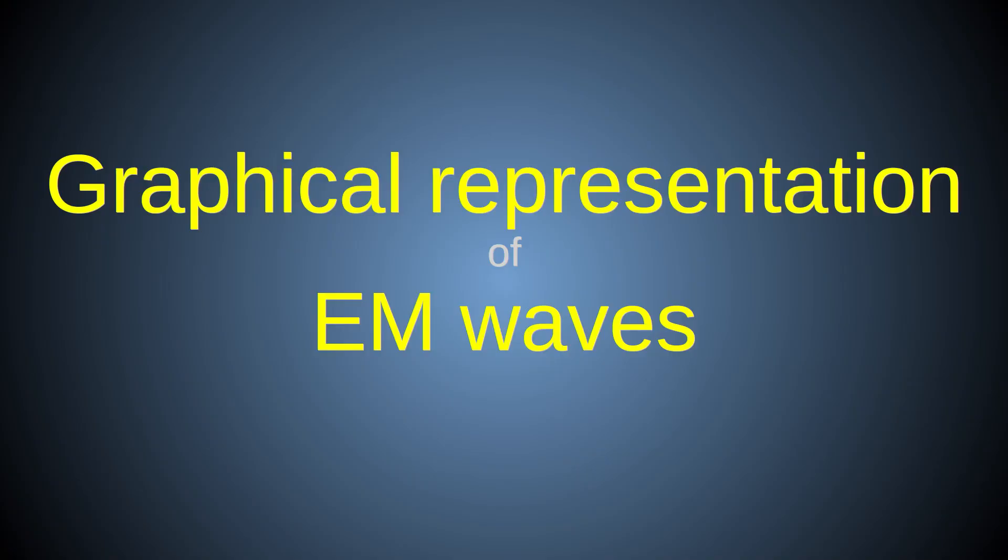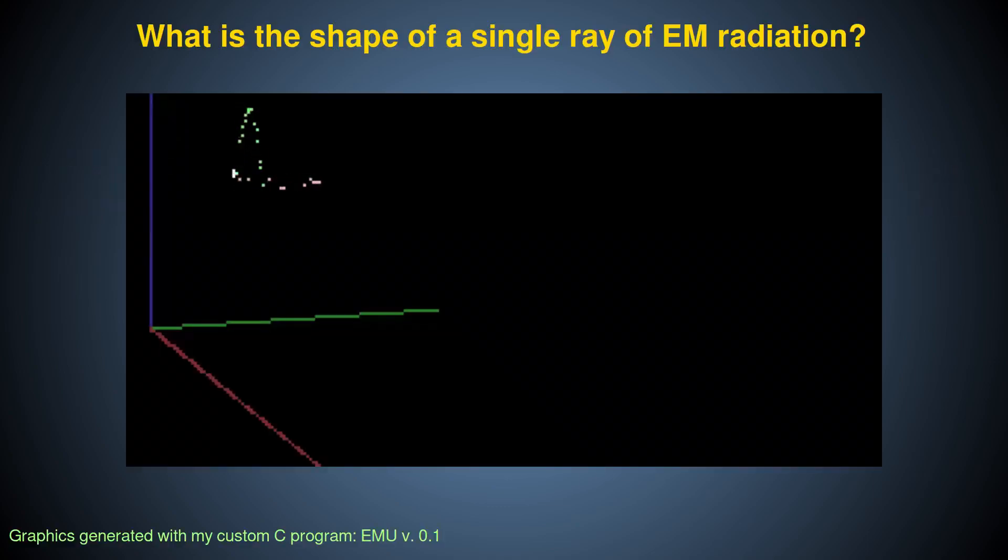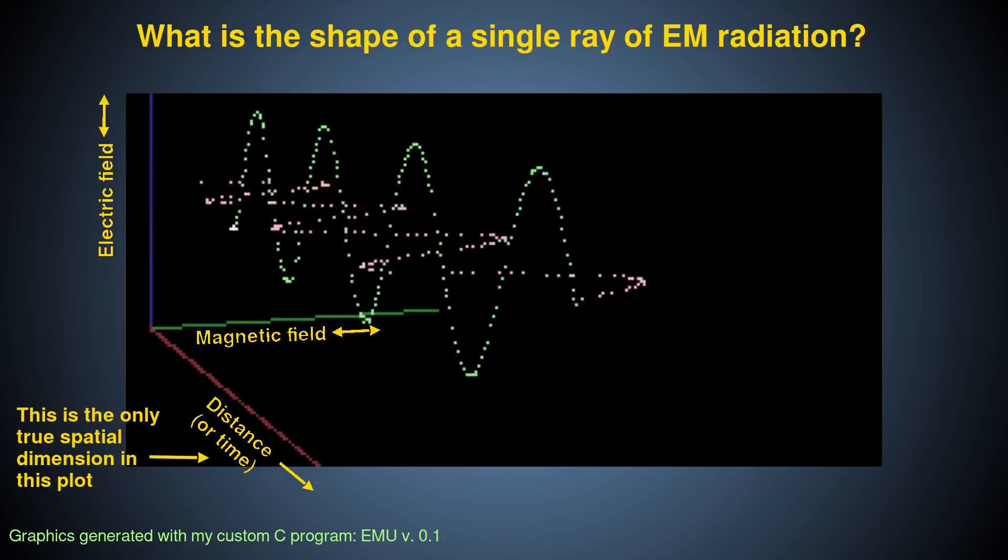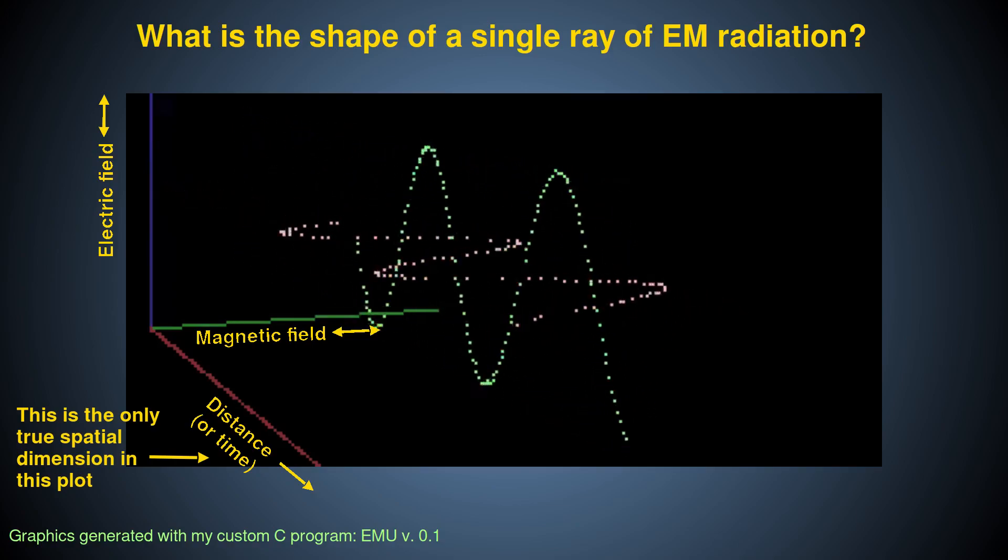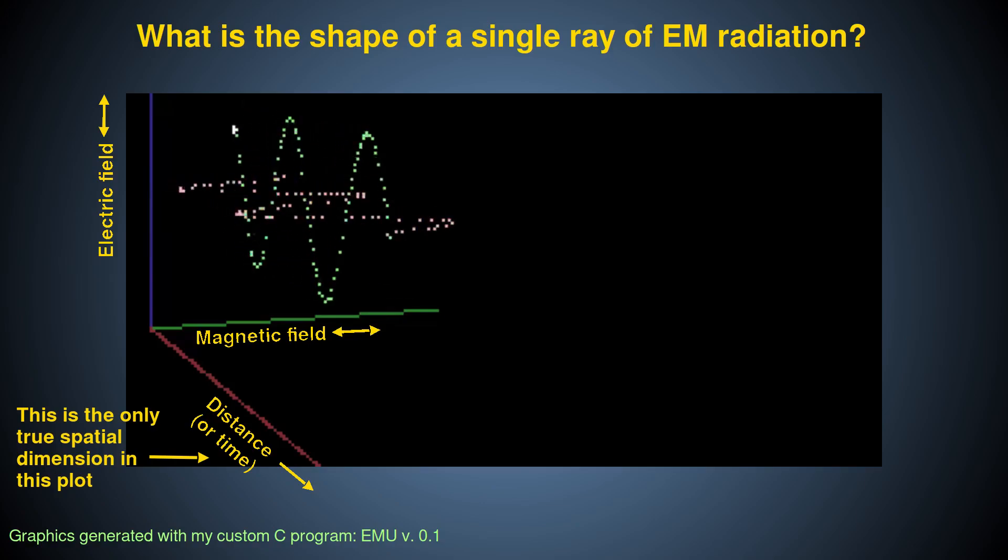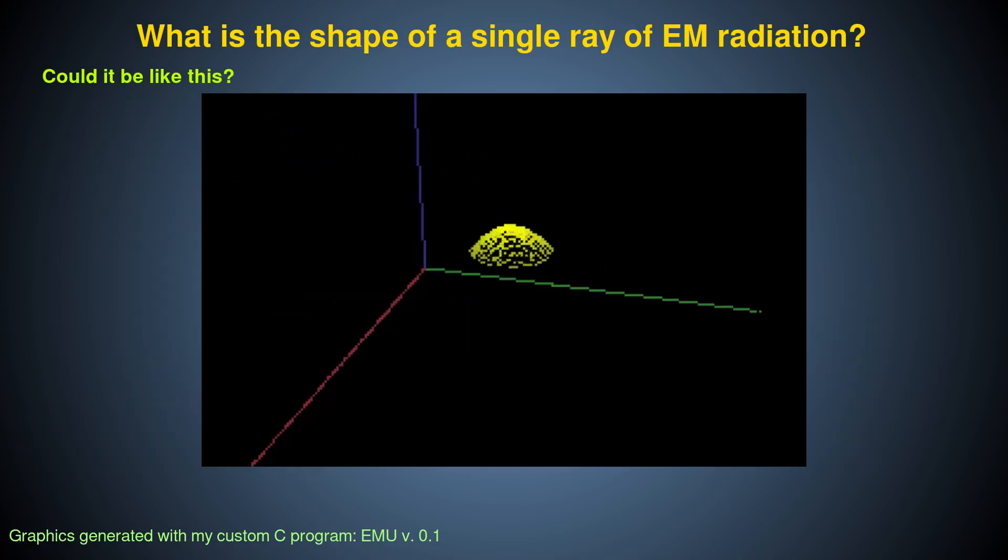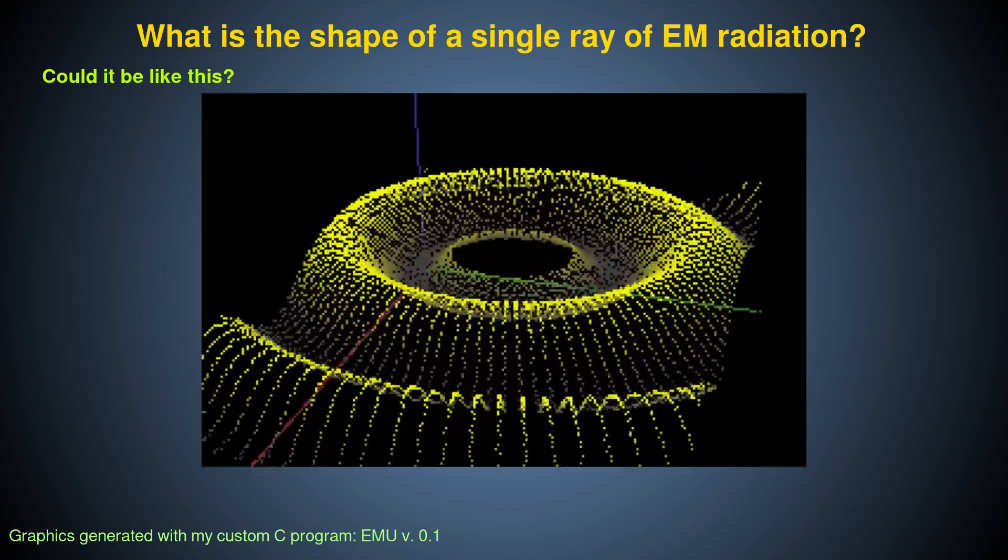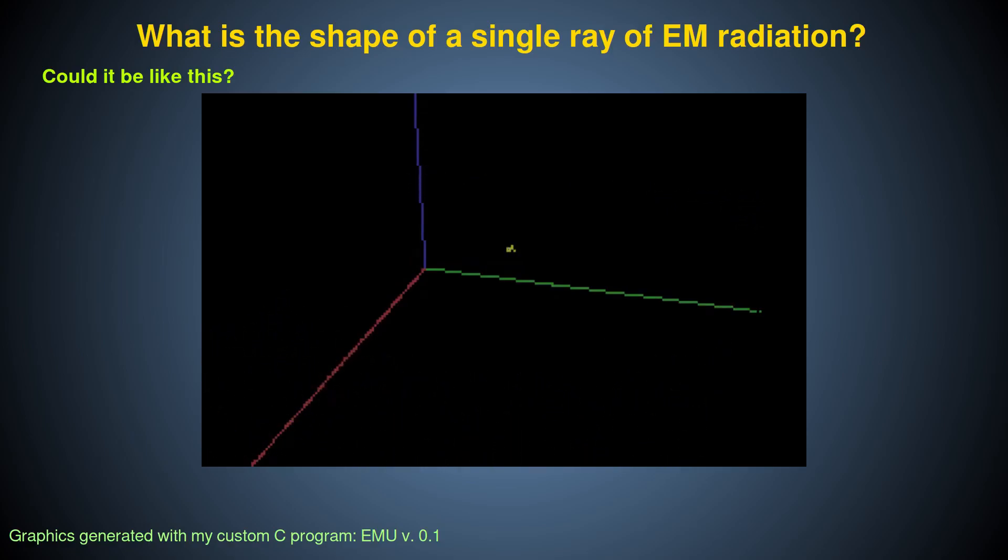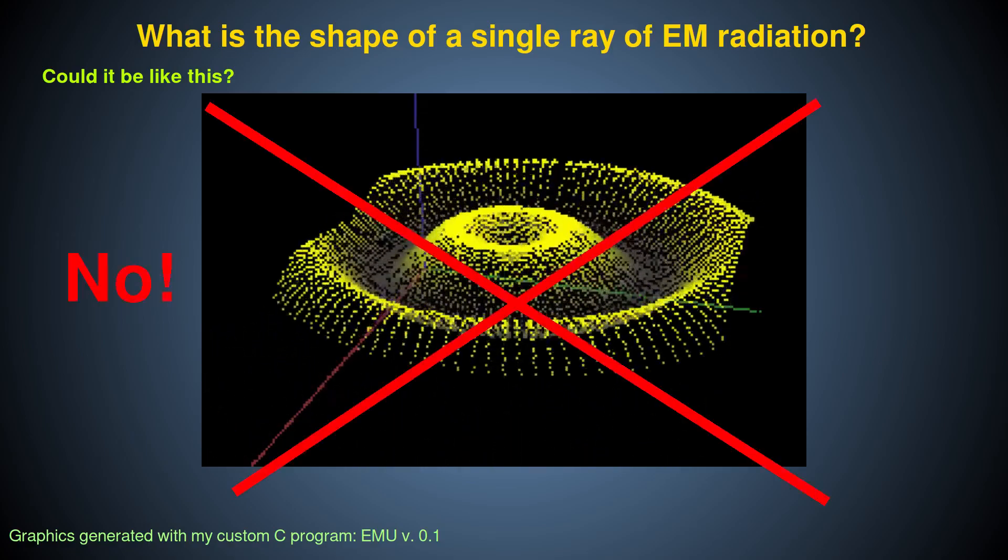It's important to understand that what this sinusoidal plot represents is the strength and direction of the electric and magnetic field of the wave, not the wave itself. Because spatial dimensions are used to represent this field's strength, some people may think that the actual shape of the EM ray is wavy, wriggling around in space like a vibrating string or ripples on a pond. But that would be wrong.